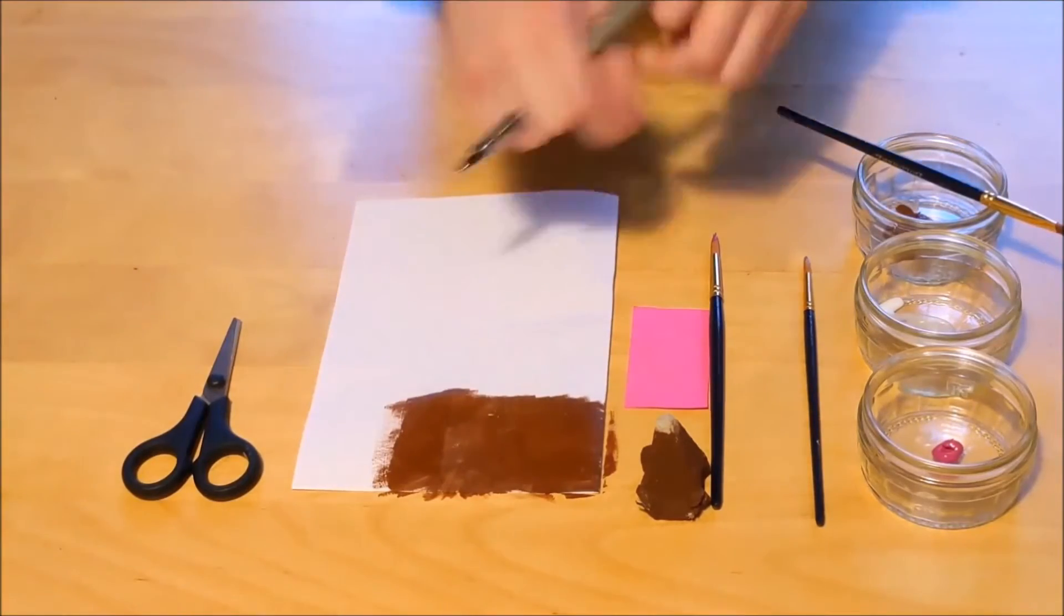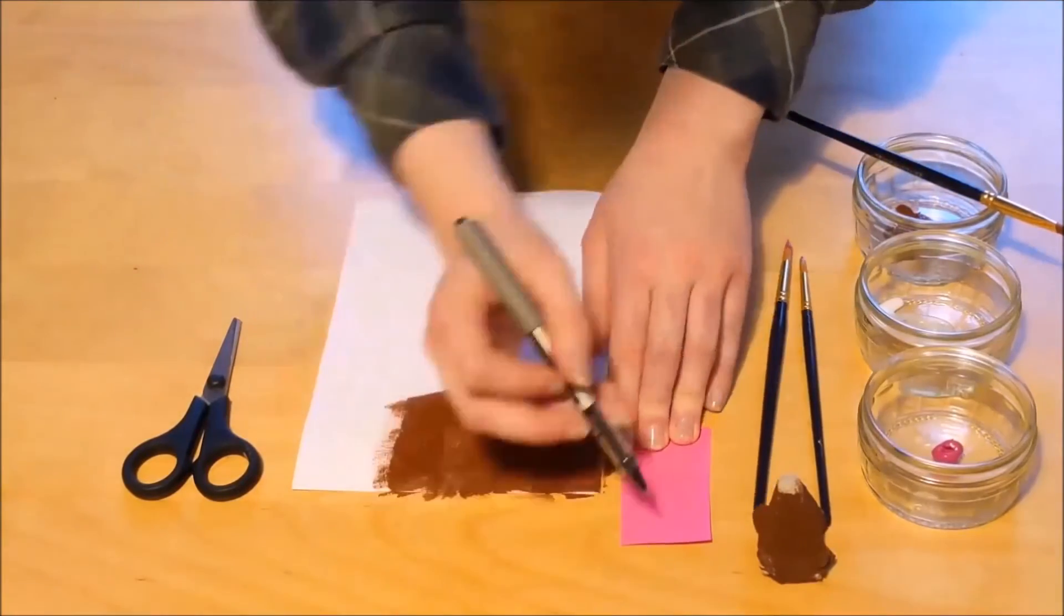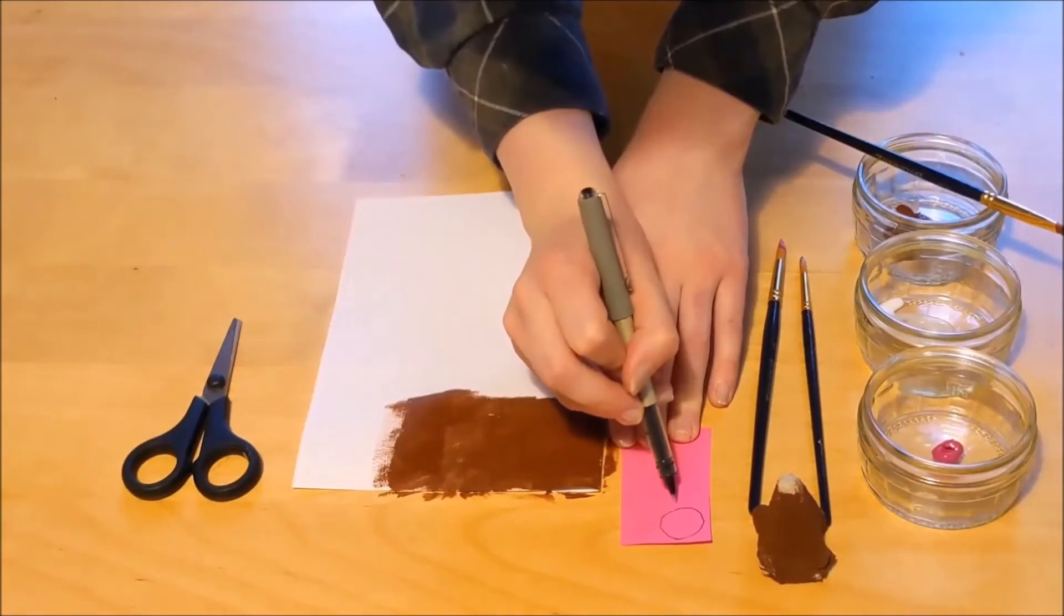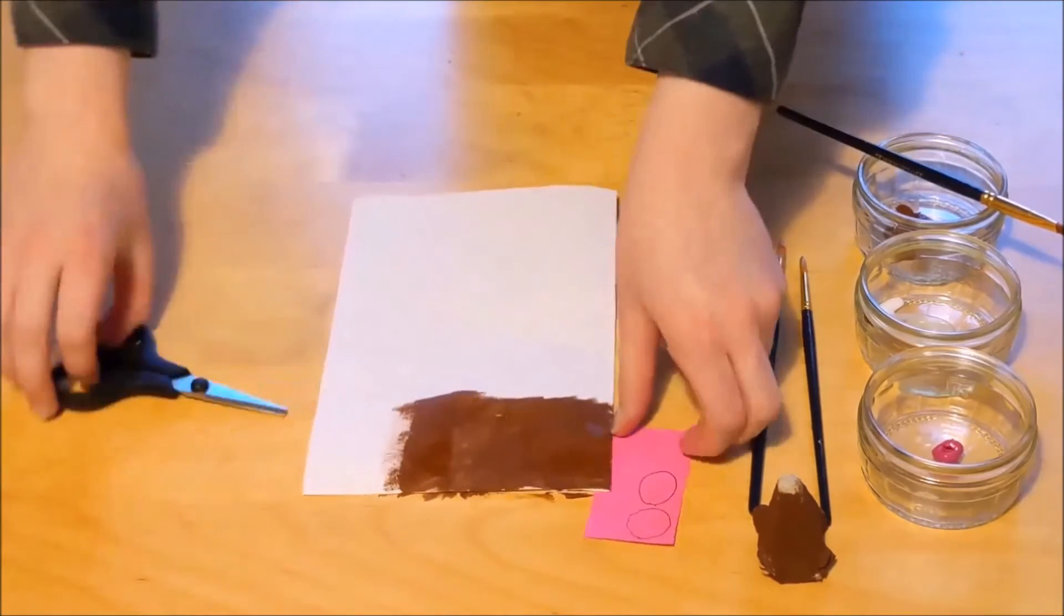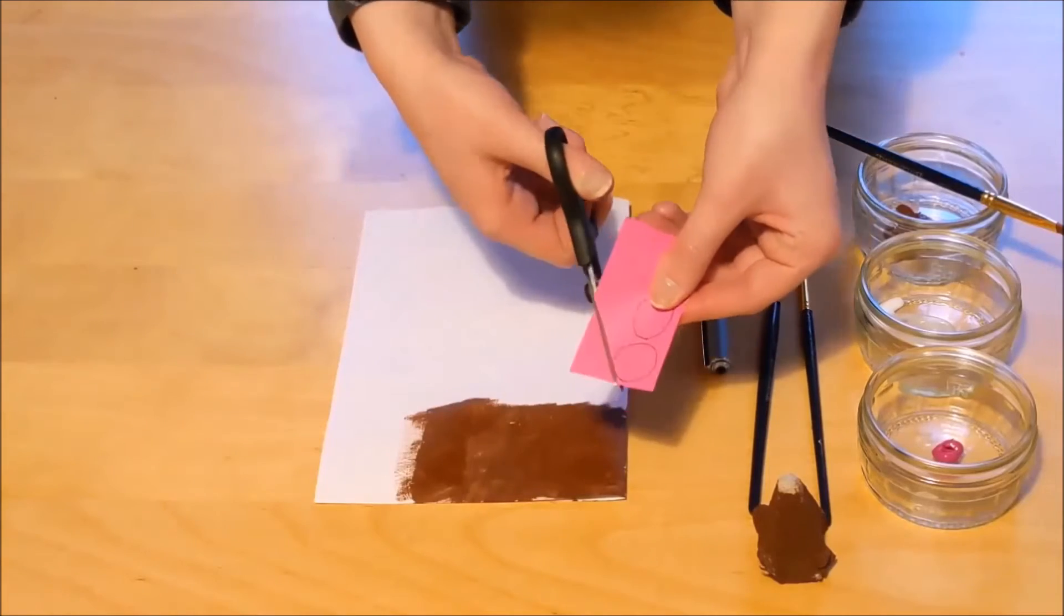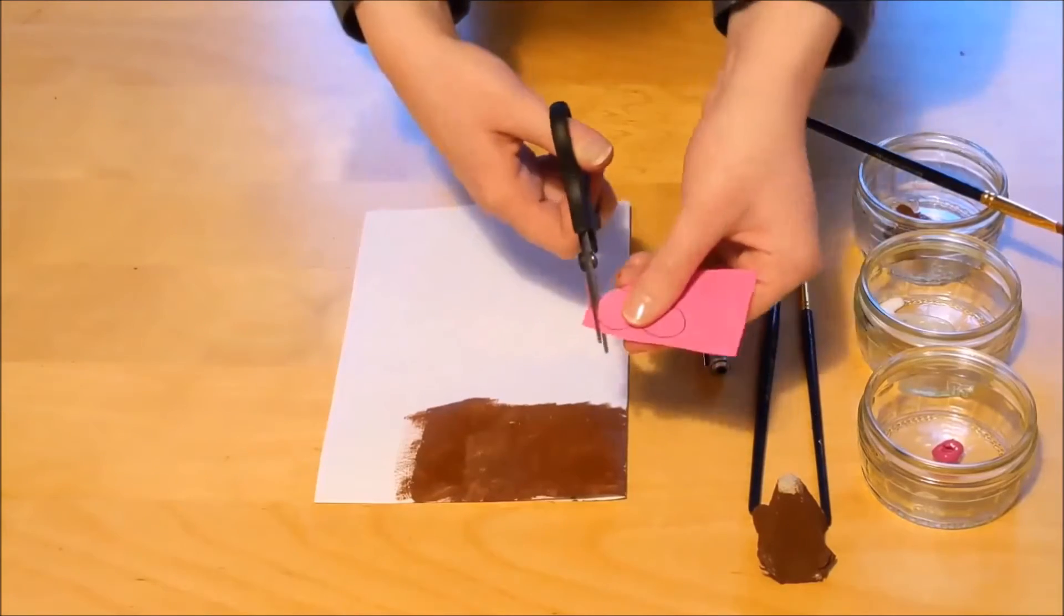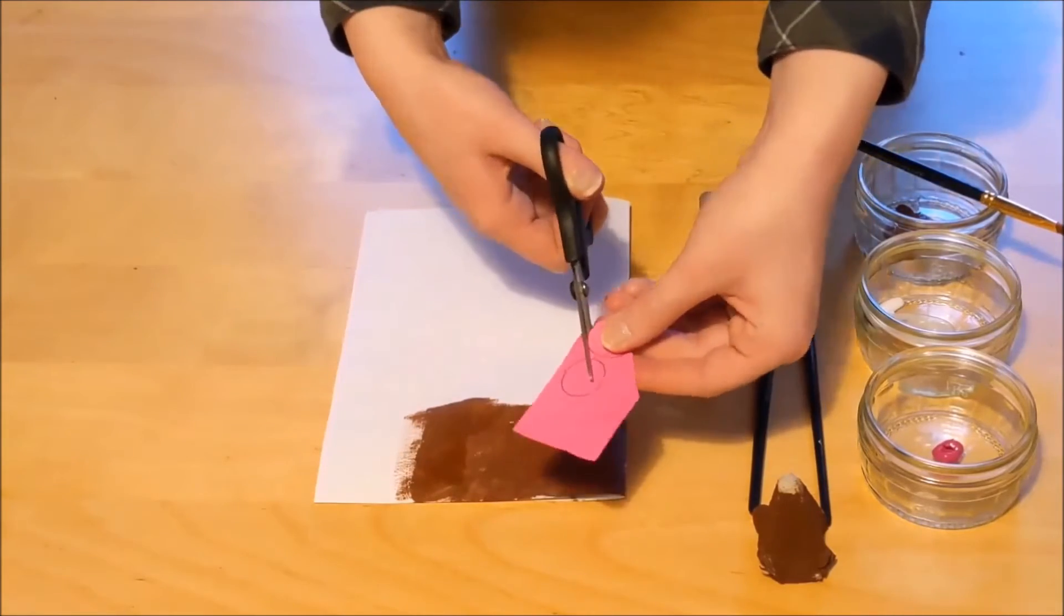While we're waiting for that to dry, we can draw two circles on our pink piece of card. This is just going to be the inner part of the mouse ear. You can make that any size you like, as long as it's smaller than the painted section.